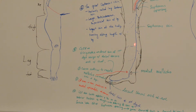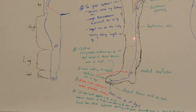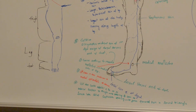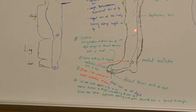The great saphenous vein then courses upward onto the knee, where it courses posterior to the medial epicondyle of the femur. The medial epicondyle of the femur is along the knee area, and the vein courses posterior to that epicondyle.